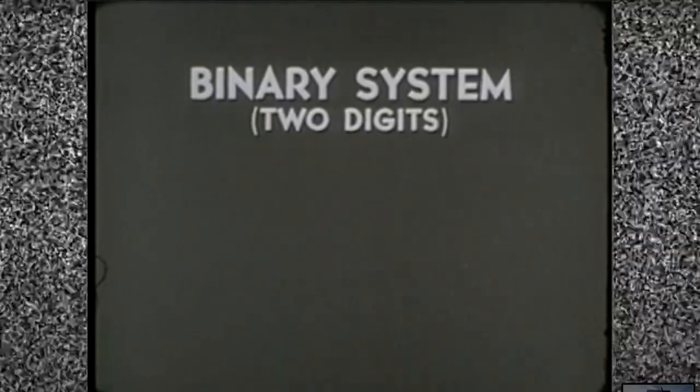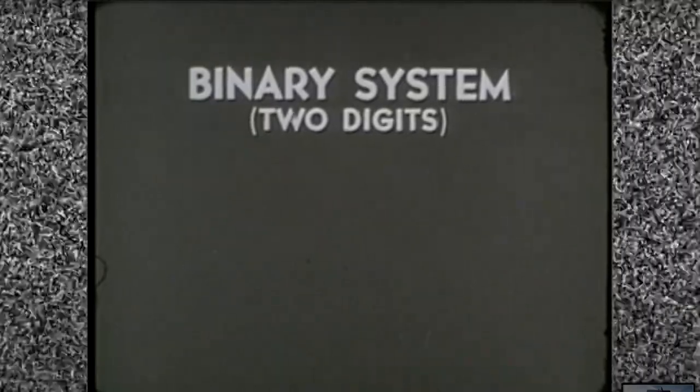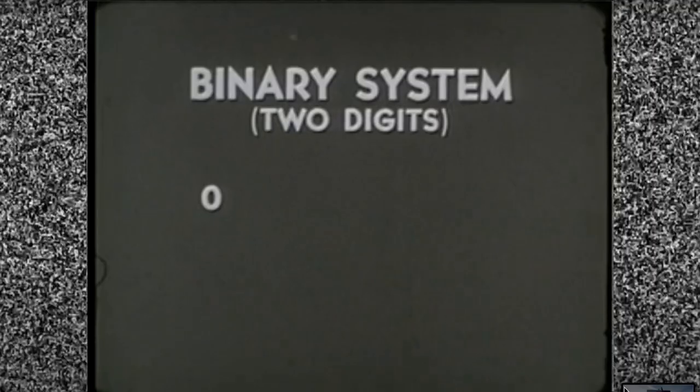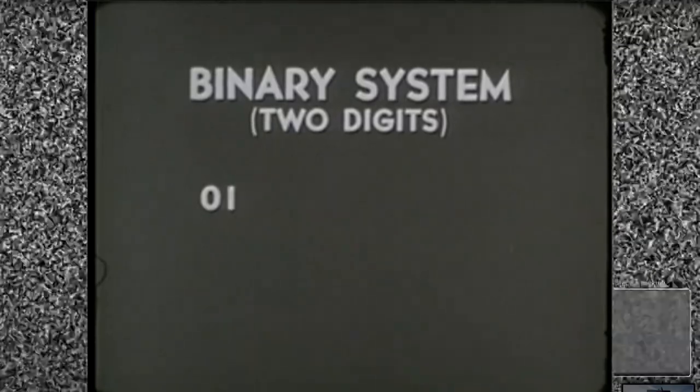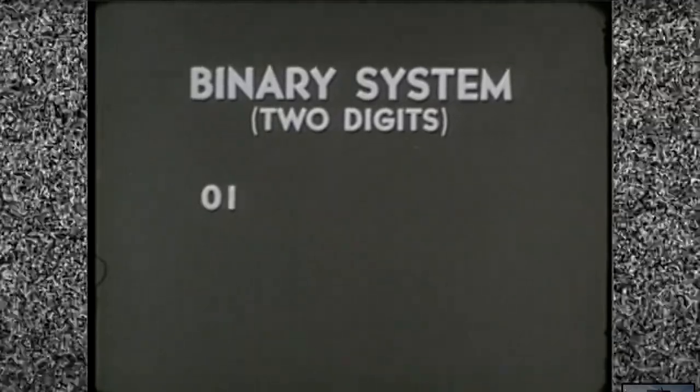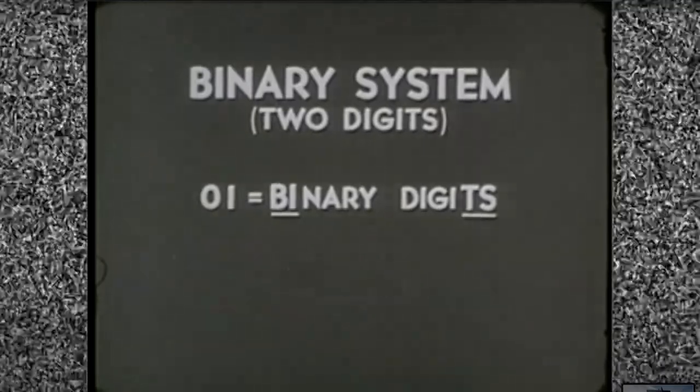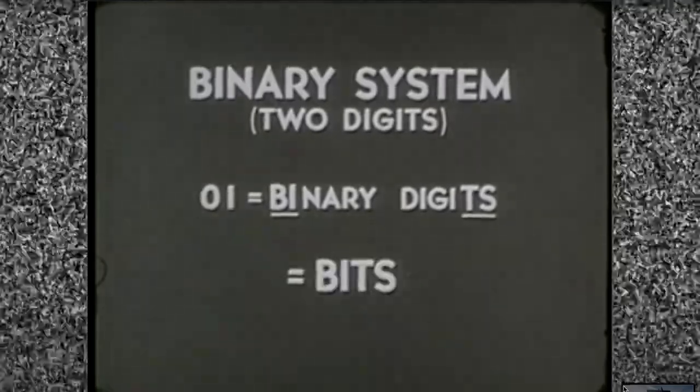Both types of magnetic cores are remarkably adaptable to the language of data processing numbering. Many ADP systems use the binary system of numbering, which employs just two digits, zero and one. These two digits are called binary digits, or bits for short.